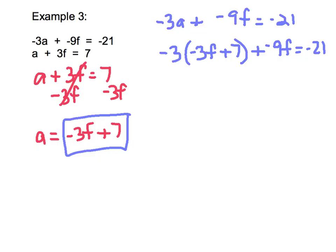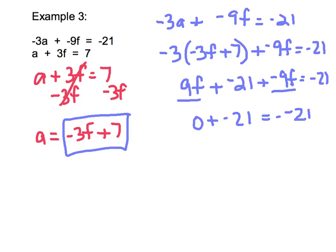And again, first thing we'll do is our distributive property. That's going to give me 9f plus negative 21 plus negative 9f equals negative 21. When I combine my f's, 9f plus negative 9f gives me 0. 0 plus negative 21 equals negative 21. And that means I get negative 21 equals negative 21.